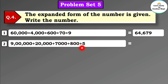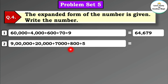Next: 9 lakh + 20,000 + 7,000 + 800 + 5. Note that no tens value is given, so in the tens place we will put 0. 9 lakh + 27,000 = 9,27,000; adding 800 and 5 gives 9,27,805.